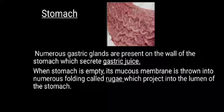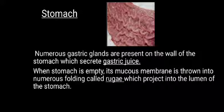The innermost wall of the stomach is called the mucous membrane, which contains a large number of gastric glands. The function of these glands is to secrete gastric juices, which help in biochemical digestion with the help of enzymes. When the stomach is empty and there is no food present, the mucous membrane throws into numerous foldings that project into the lumen of the stomach, and these foldings are called rugae.